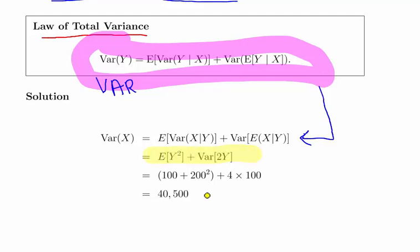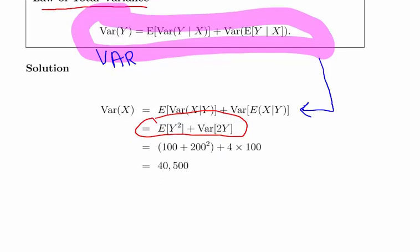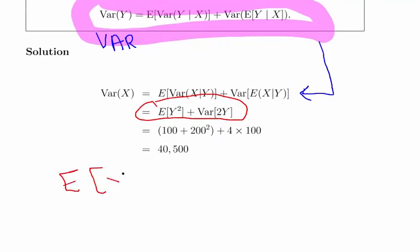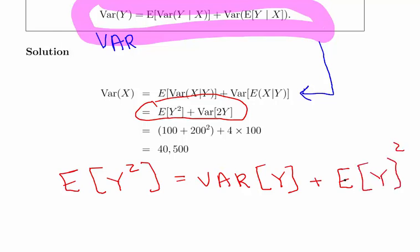So we have the expected value of y squared plus the variance of 2y. I'm going to break it up into two parts. The expected value of y squared can be written as the variance of Y, which we know, plus the expected value of Y squared, which is equal to 100 plus 200 squared.